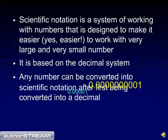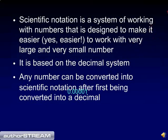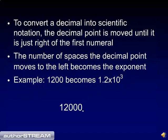Any number can be converted into scientific notation after first being converted into a decimal. To convert a decimal into scientific notation, the decimal point is moved until it is just right of the first numeral. The number of spaces the decimal point moves to the left becomes the exponent. For example, to convert the number 1200 into scientific notation, you move the decimal point 1, 2, 3 spaces to the left, and you state the number as 1.2 times 10 to the third.